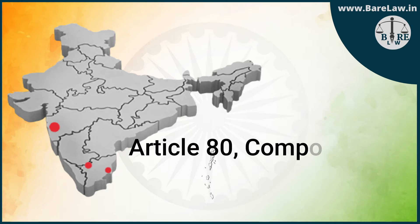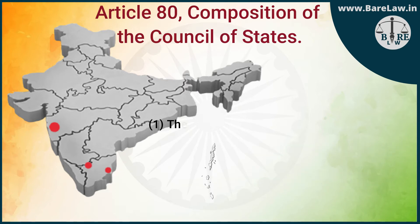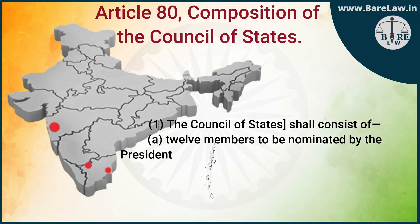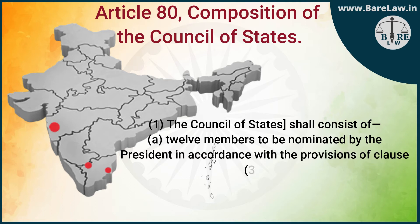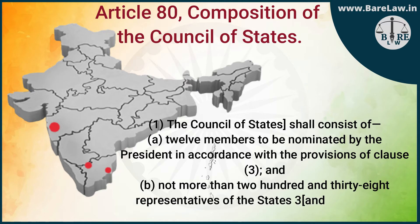Article 80: Composition of the Council of States. Sub-Clause (1): The Council of States shall consist of — (a) 12 Members to be nominated by the President in accordance with the provisions of Clause (3), and (b) not more than 238 Representatives of the States and of the Union Territories.